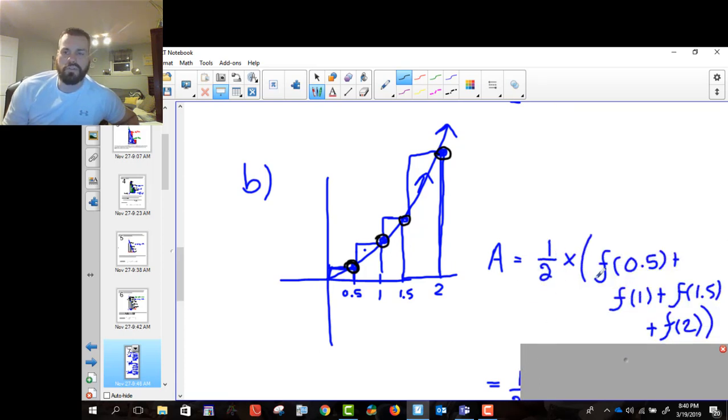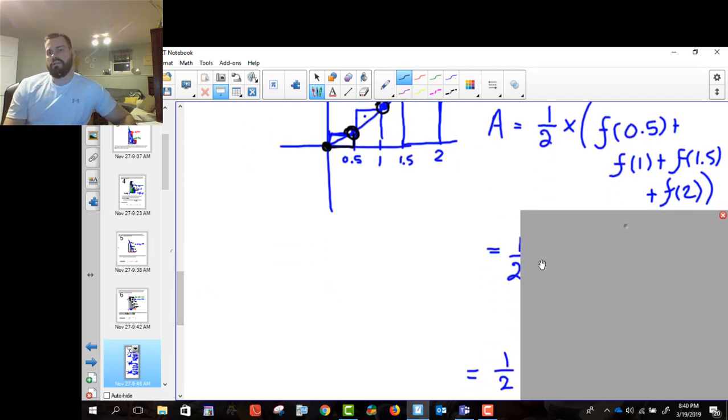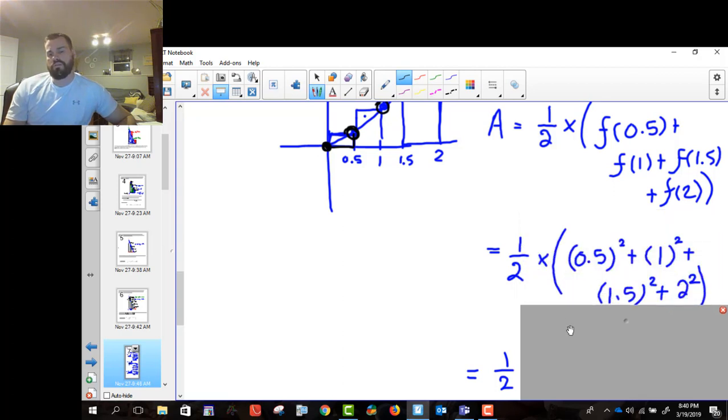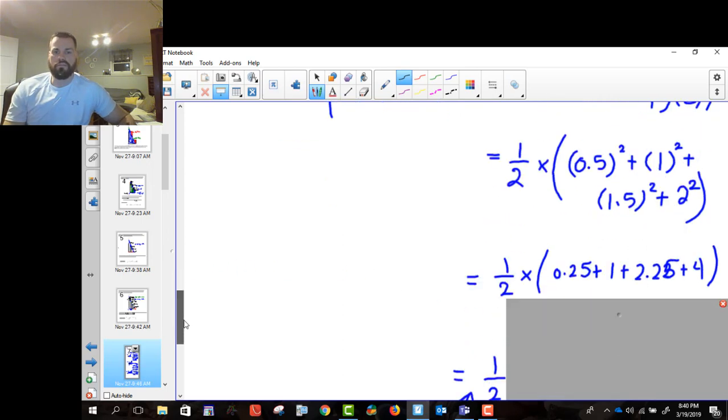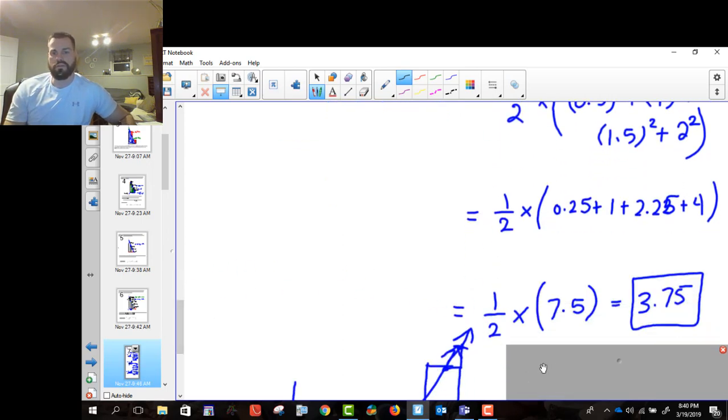Base is still the same. We're still going up by the same amount, 0.5, but we're just starting one interval over. So we're starting, instead of starting at the left endpoint, we move over by a base, and we start there, and then we count from there. We then plug that into the same formula, so we square it again because it's x squared, and then we figure out what our answer is going to be.